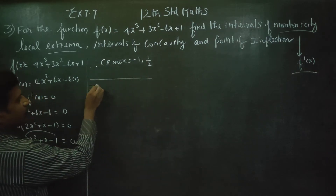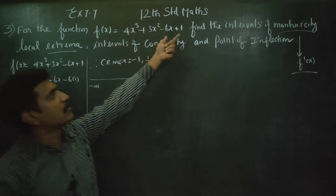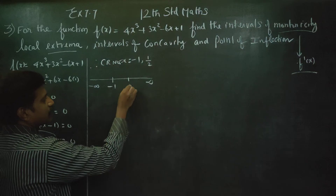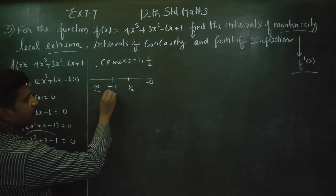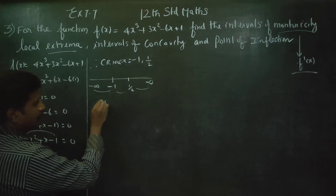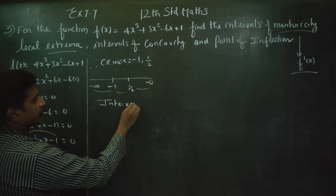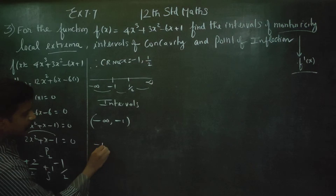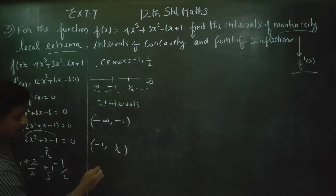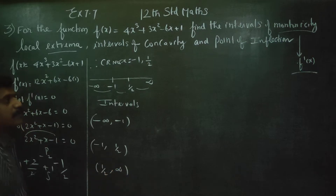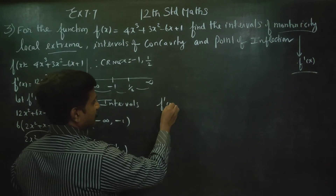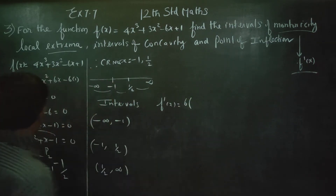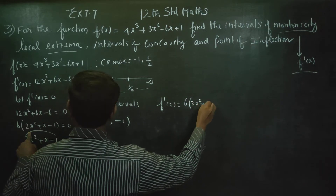The number line goes from minus infinity to plus infinity, with critical points at x = -1 and x = 1/2. This gives us three intervals: (-∞, -1), (-1, 1/2), and (1/2, ∞). We can rewrite f'(x) as 6(2x² + x - 1).